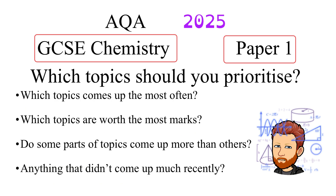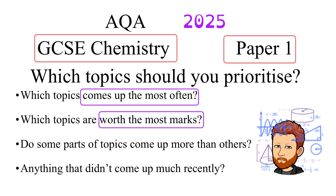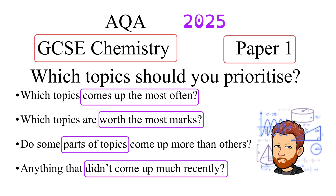The questions I'll be looking to answer are: which topics come up the most often? Which topics are worth the most marks? Are some parts of topics more important to revise than others? And are there some things that haven't come up much recently which could therefore be slightly more likely to come up in the future?